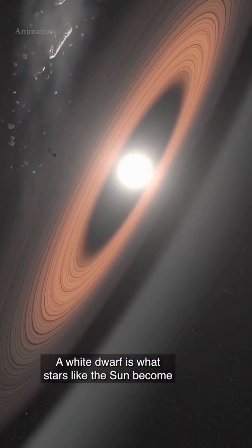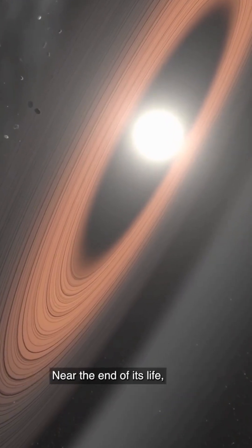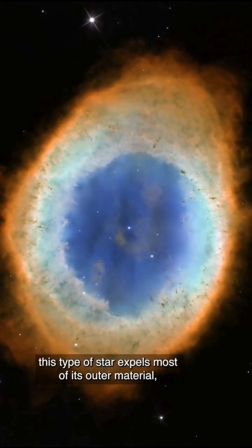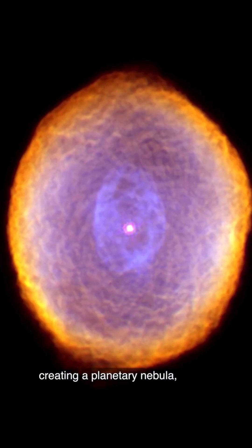A white dwarf is what stars like the Sun become after they exhaust their nuclear fuel. Near the end of its life, this type of star expels most of its outer material, creating a planetary nebula.